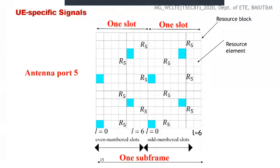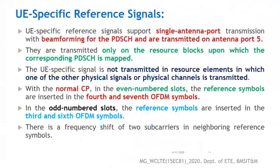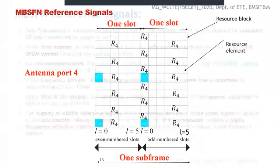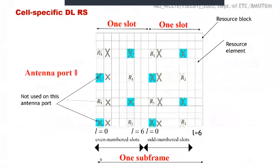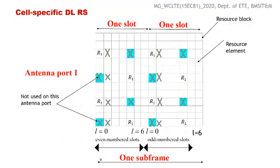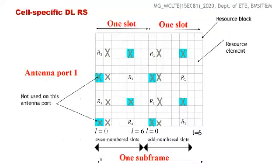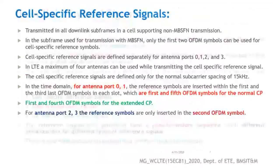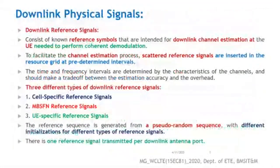This concludes the discussion of UE-specific reference signals, MBSFN reference signals, and cell-specific reference signals. To summarize: ports 0 and 1 are similar with reversed patterns; ports 2 and 3 are similar with reversed patterns; ports 2 and 3 use only the second OFDM symbol; and the pattern differs between even and odd number slots in all cases.